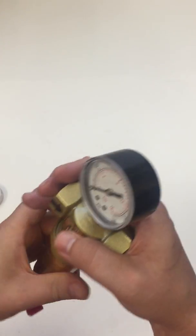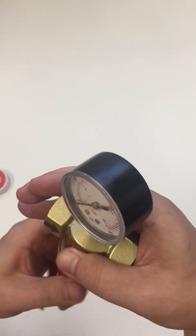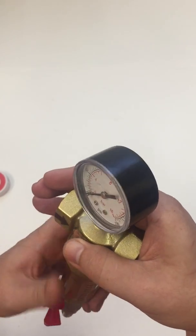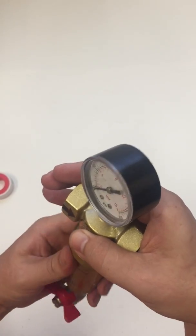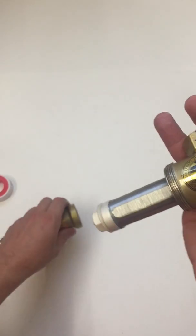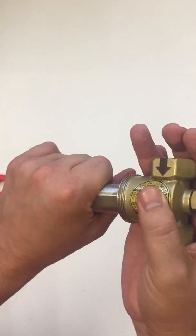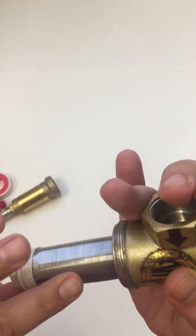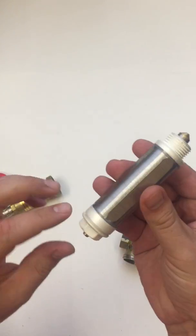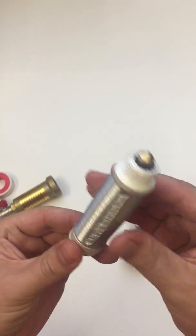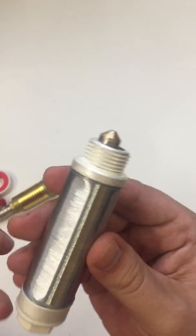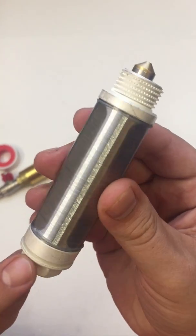If we open the filter, we can see the cartridge. If we take it out, we can see that the corpus of the shell is coated in nano-silver.